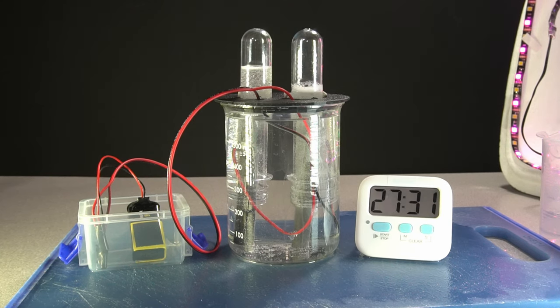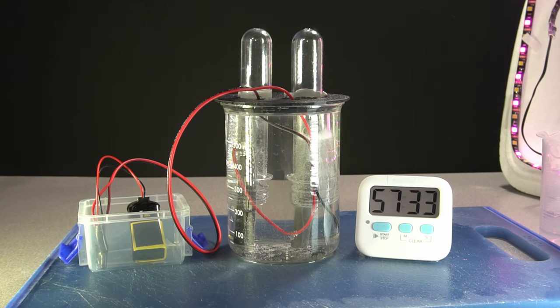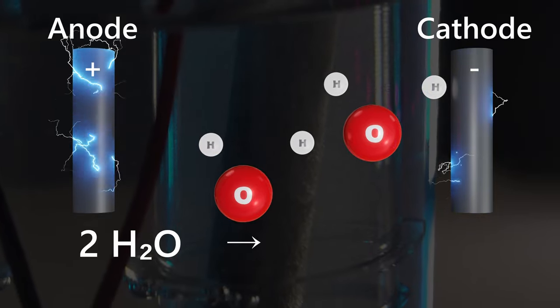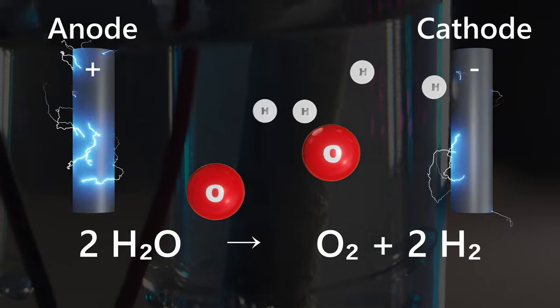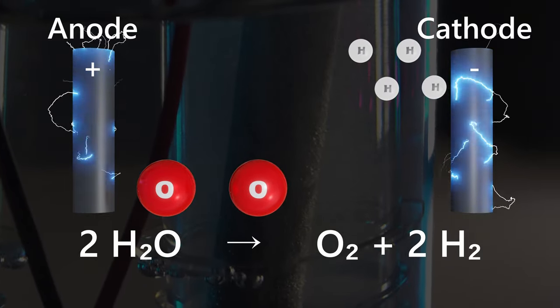And after a little over an hour, we can see that one tube contains about twice as much gas as the other one. That's because for every oxygen atom in the water, there are two hydrogen atoms. So there's twice as much hydrogen gas as there is oxygen.